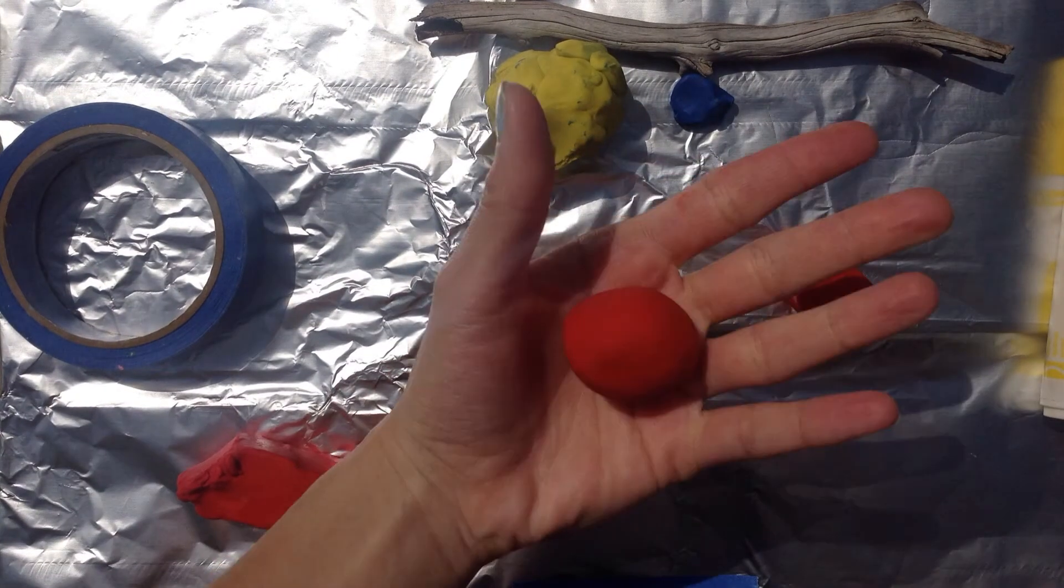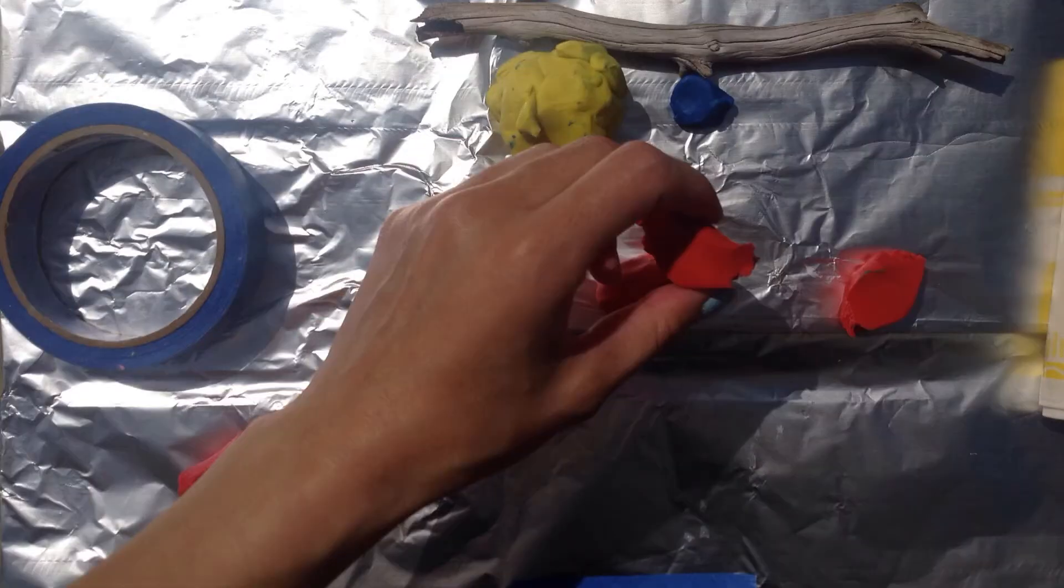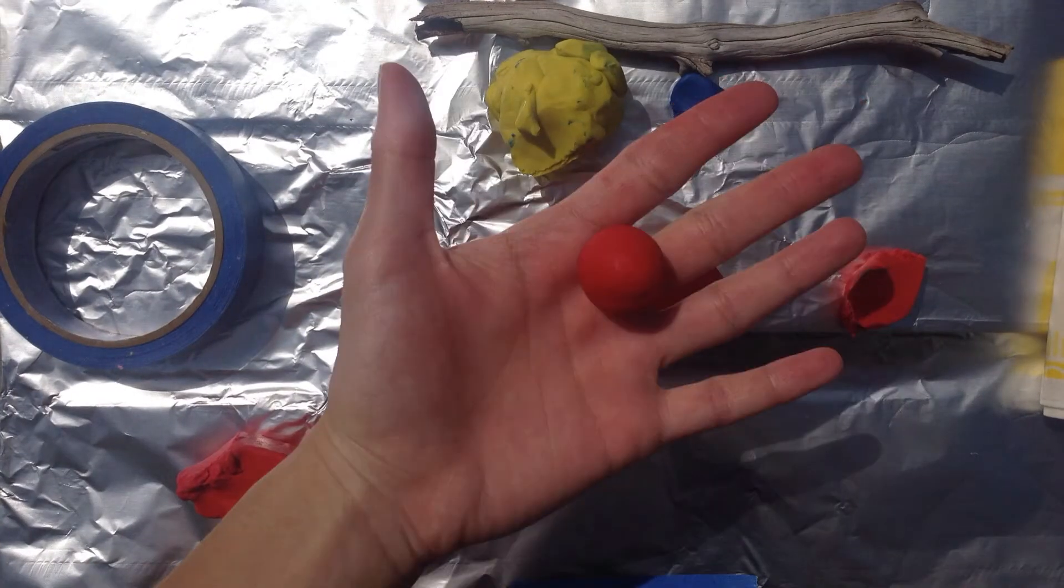First step, make a round torso and squish it a little on each end. Make a round head.